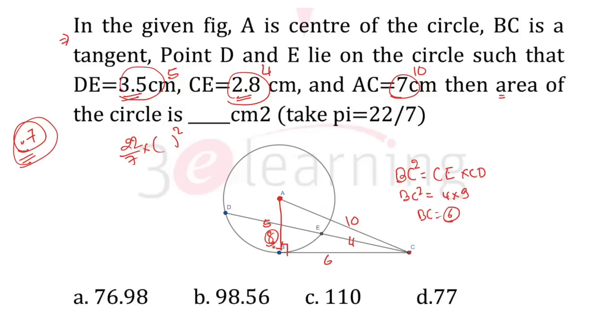This is a right angle triangle, but this one is 8. If we have taken 0.7 out, we must conclude it back, so this one is 8 into 0.7 and this is our radius. Now we have 22 by 7 into 8 into 8 into 7 by 10 into 7 by 10.